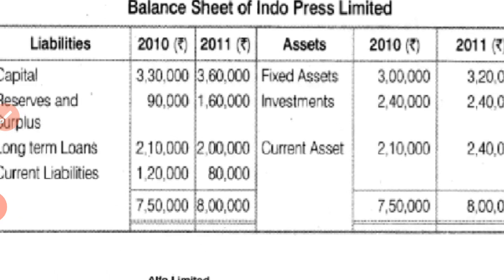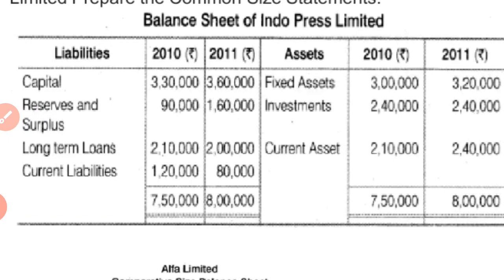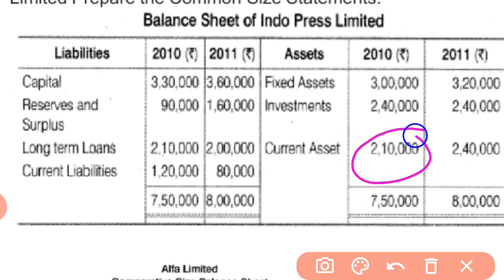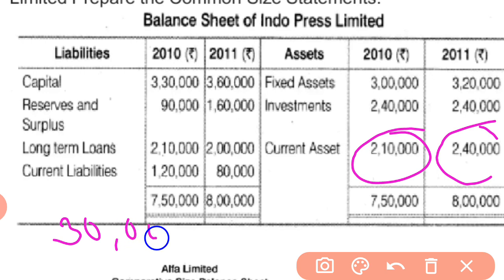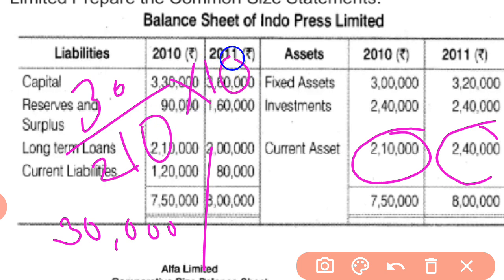When you prepare the comparative balance sheet, you have to give two more columns — absolute increase or decrease, and percentage increase or decrease. For example, current assets shown as 2 lakh 10 thousand in 2010 and 2 lakh 40 thousand in 2011. The absolute increase or decrease column shows 30,000. The percentage increase is 30,000 divided by 2 lakh 10 thousand multiplied by 100, giving the percentage, which you show in the percentage column.